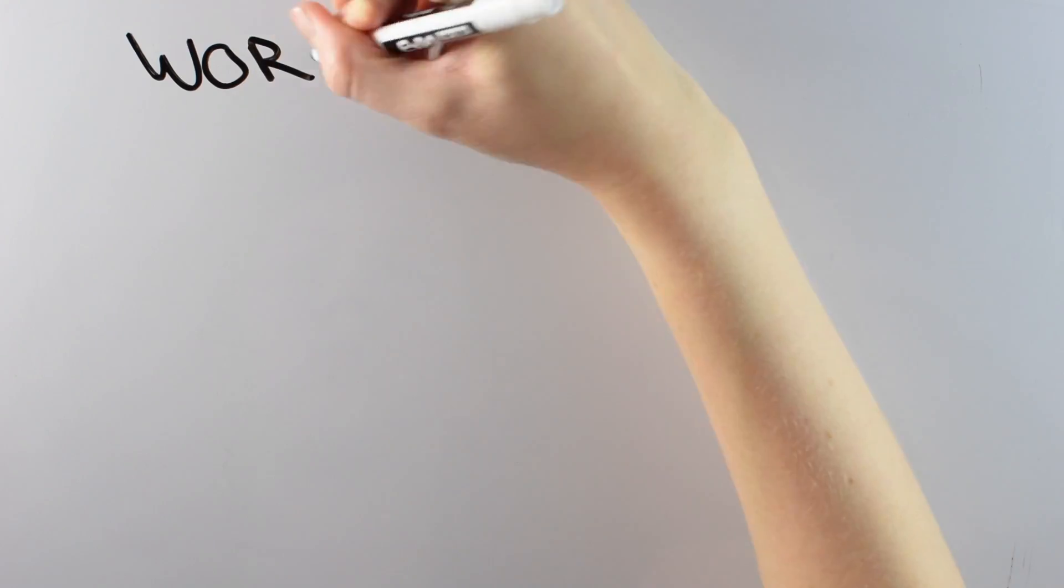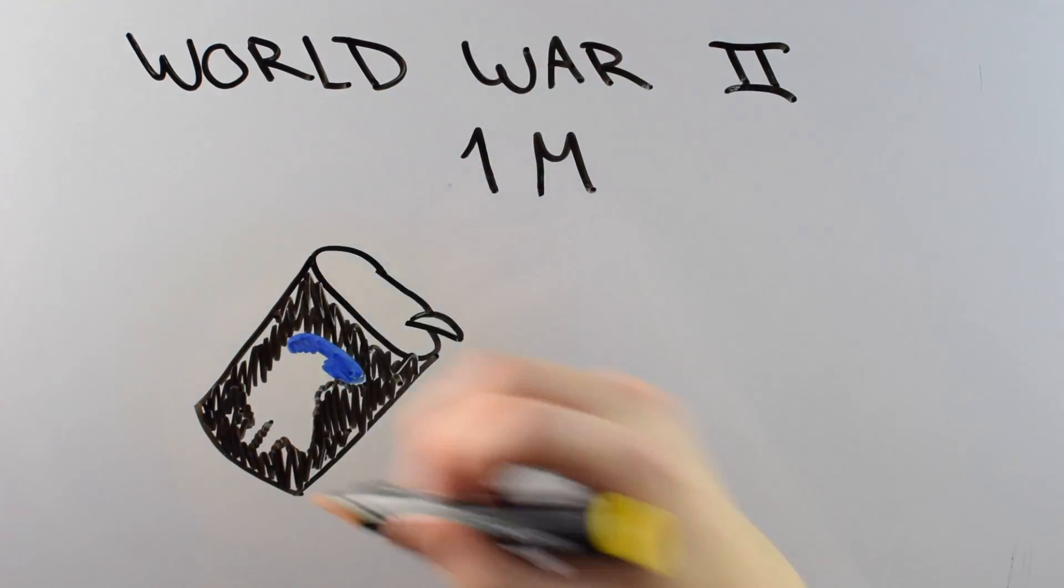For World War II, the US death toll is 1 million, which is the number of grains of salt in half a cup.